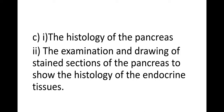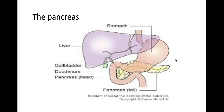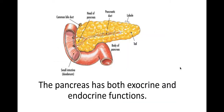Welcome biologists. In this session we're going to take a look at the histology of the pancreas. You need to be able to look at microscope images taken from pancreatic tissue and identify different parts from that image. First of all, let's take a look at where the pancreas is. As you can see here, it's situated just behind the stomach within your abdomen, and the pancreas is considered to be both exocrine and endocrine.